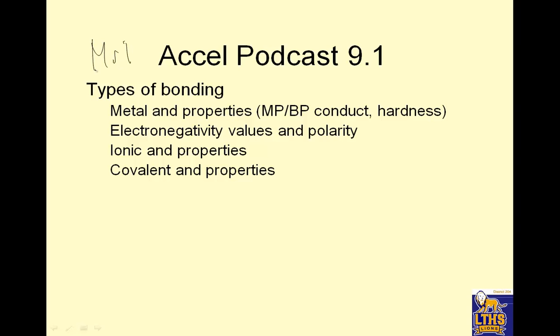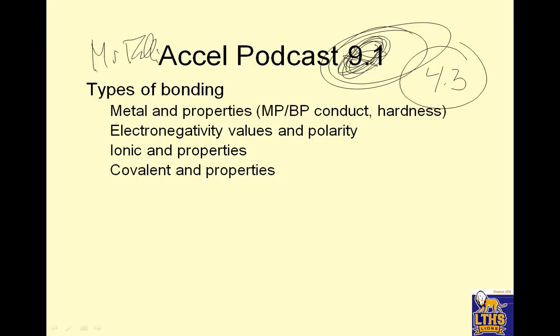Hi buddy, this is Mr. Folly. I'm thrilled to be podcasting again. This is podcast 4.3. We're going to talk about types of bonding, a little bit of metal properties, electronegativity values and polarity, ionic properties - really focusing on ionic and a little bit of covalent properties.